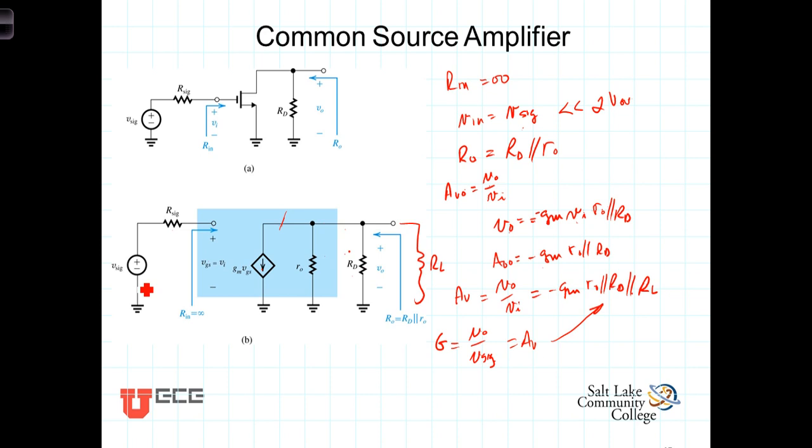The output resistance though is relatively high. Remember we want to keep R sub D high because our gain is proportional to R sub D. But the output resistance is also proportional to R sub D. So there's a conflict of competing desires here.